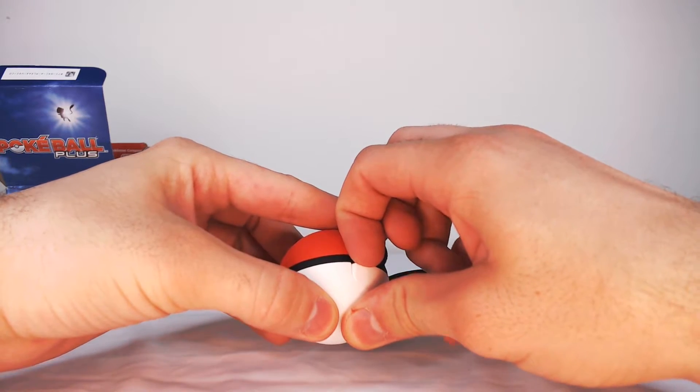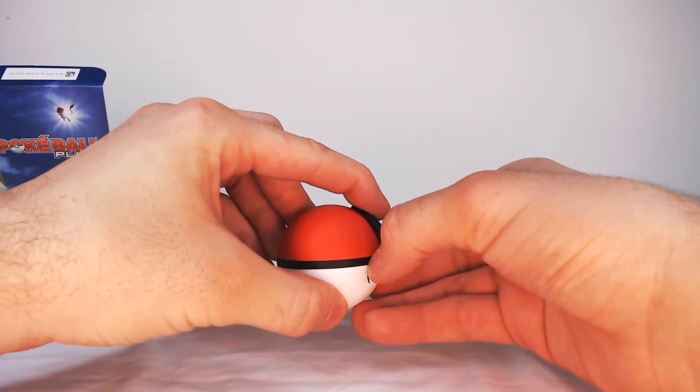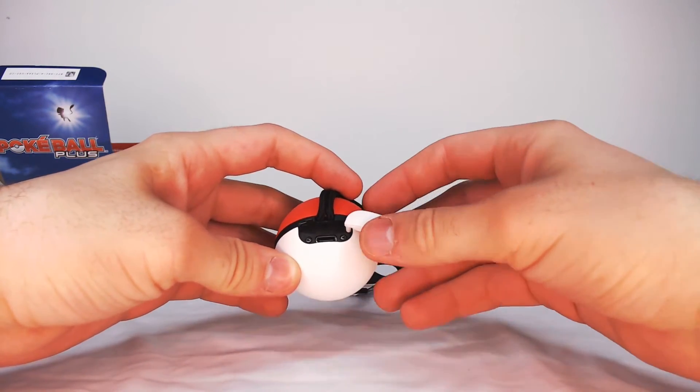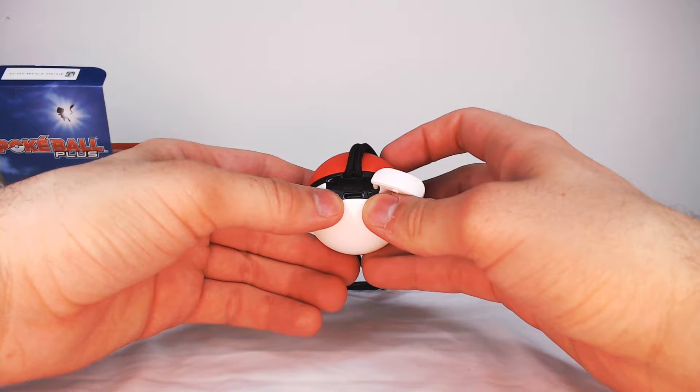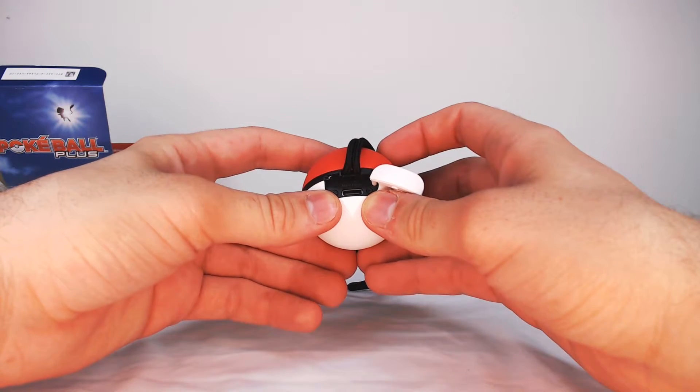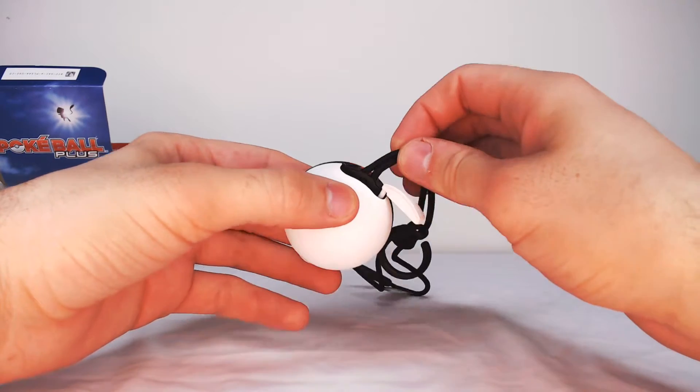There's a flap on the back side. This is where you connect a USB Type-C connector to charge it and sync it to your Nintendo Switch. It's also where the lanyard connects.